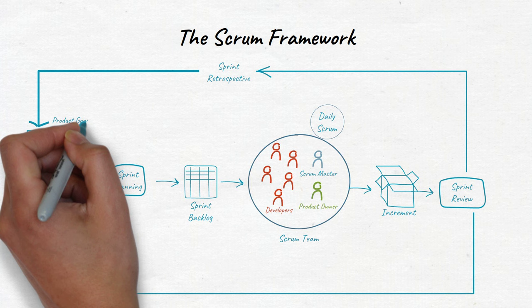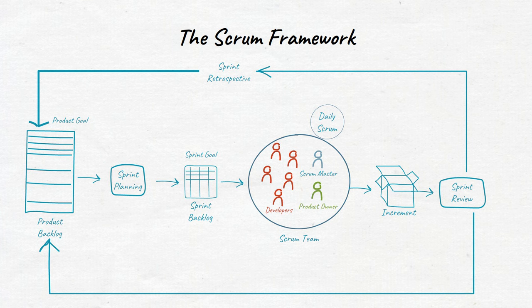For the product backlog, that's the product goal. For the sprint backlog, that's the sprint goal. And for the increment, it's the definition of done.